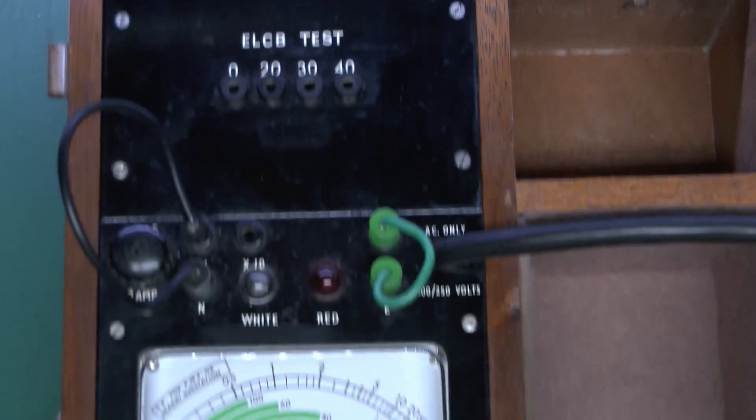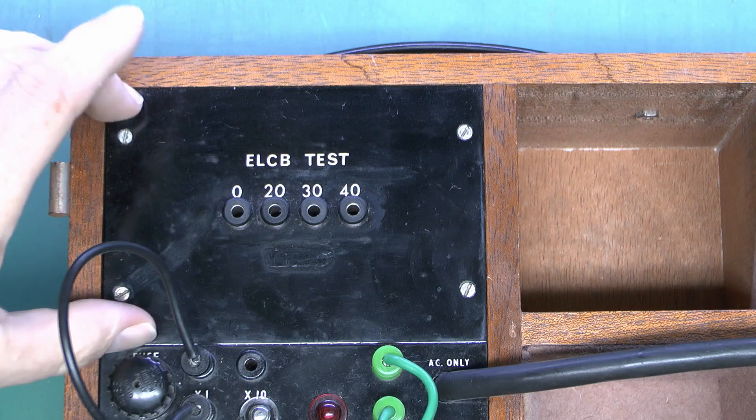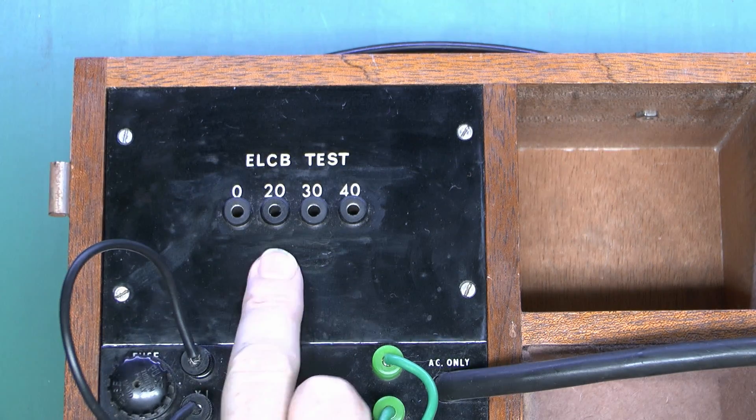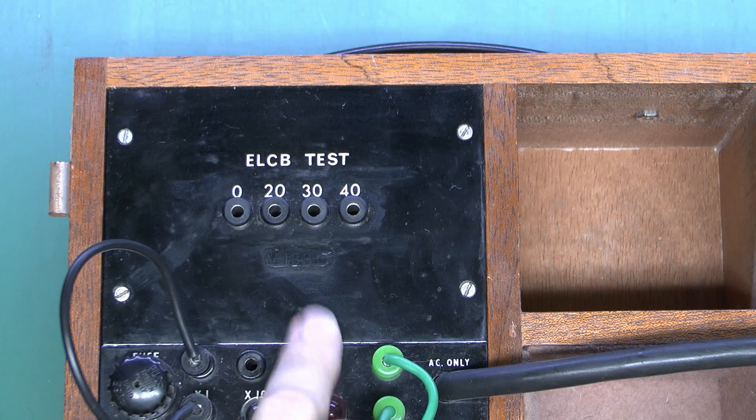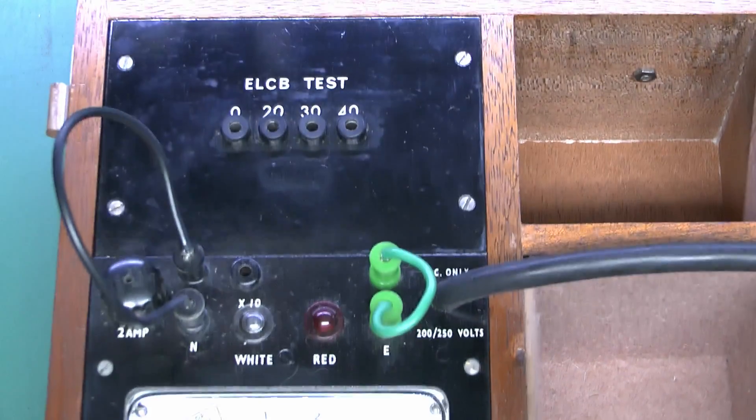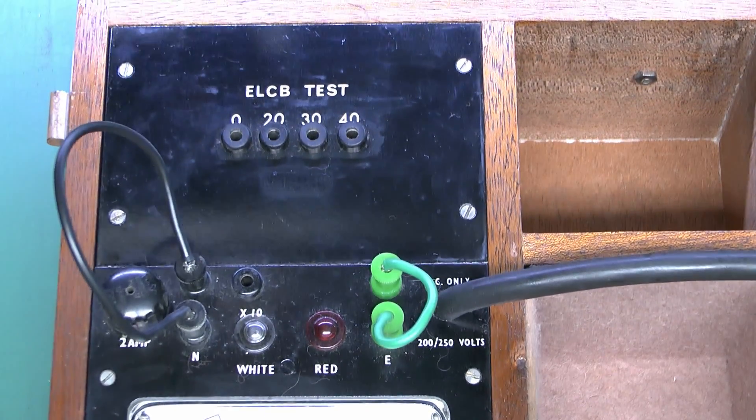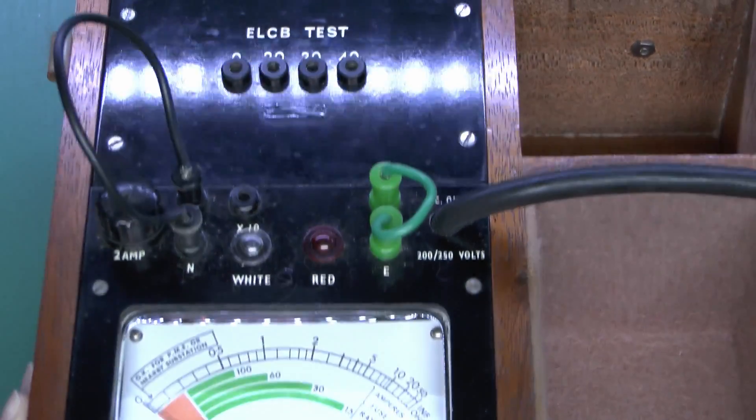At the top here we can see this top section is separate. It's marked ELCB test, and someone's actually coloured over the thing there, which would have had a model number or part number for that. You can see there some kind of number is concealed underneath that.